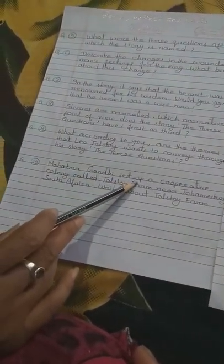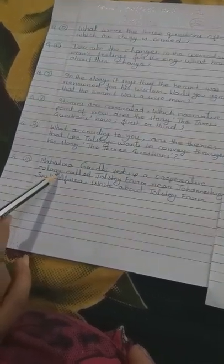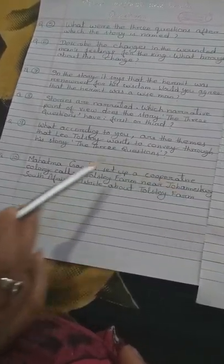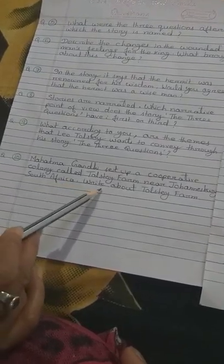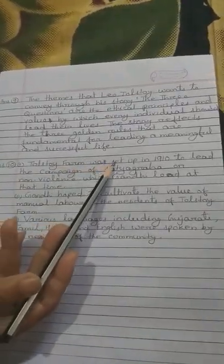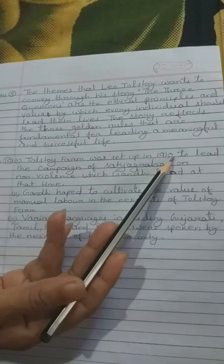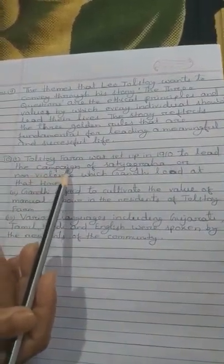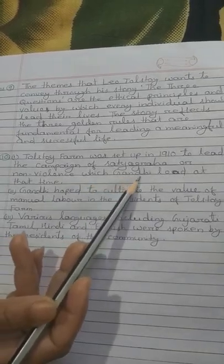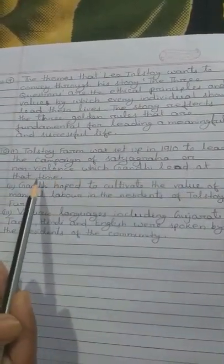Then question number 10, Mahatma Gandhi set up a cooperative colony called Tolstoy farm near Johannesburg, South Africa, write about Tolstoy farm. Answer number 10, Tolstoy farm was set up in 1910 to lead the campaign of Satyagraha or non-violence which Gandhi led at that time.